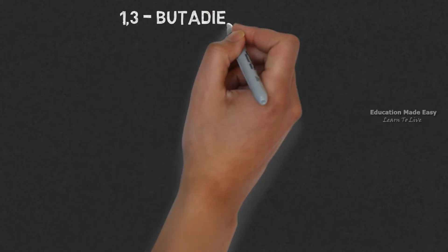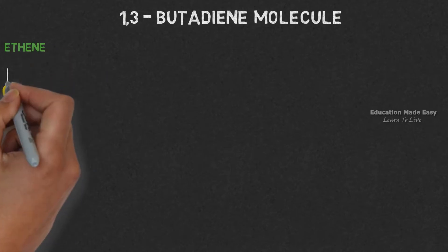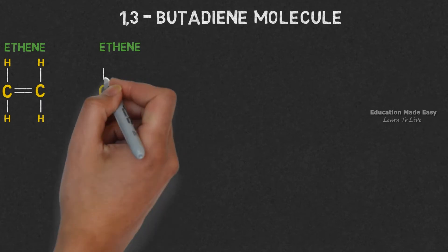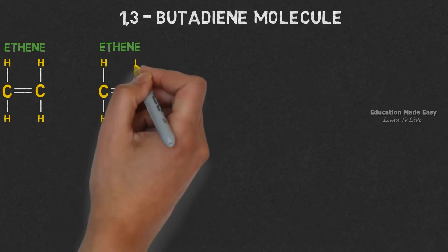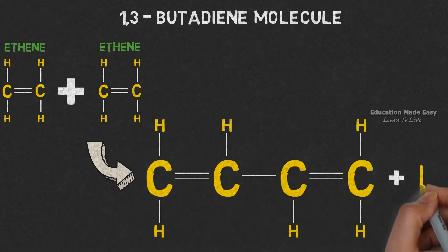Let us first learn how 1,3-butadiene molecule is made. 1,3-butadiene can be formed from ethene. The chemical formula of ethene is C2H4. Two ethene molecules combined form 1,3-butadiene and H2 gas.